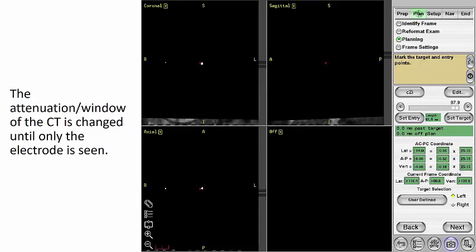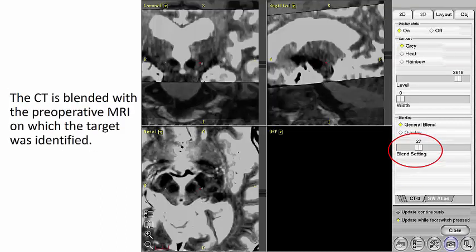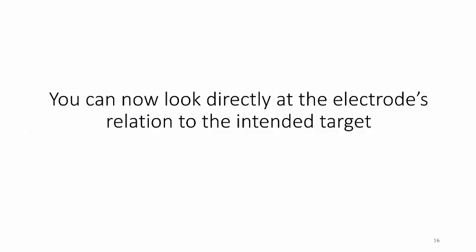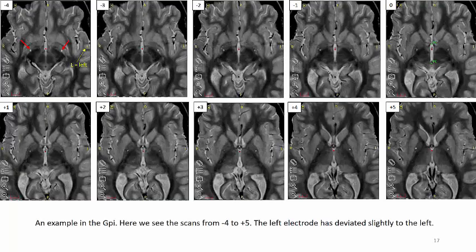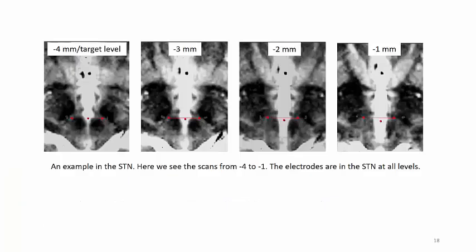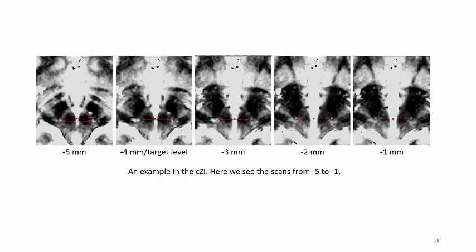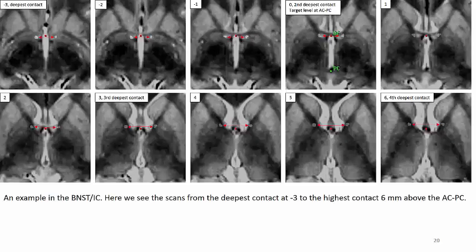The window of the CT is then changed until only the electrode is seen. The CT is blended with the preoperative MRI on which the target was identified. You can now look directly at the electrode's relation to the intended target. Here we have one example in the GPi — we see the scans from 4 mm below the ACPC level to 5 mm above. Another example in the subthalamic nucleus. An example in the caudal zona inserta. And finally, one example in the bed nucleus of stria terminalis and internal capsule.